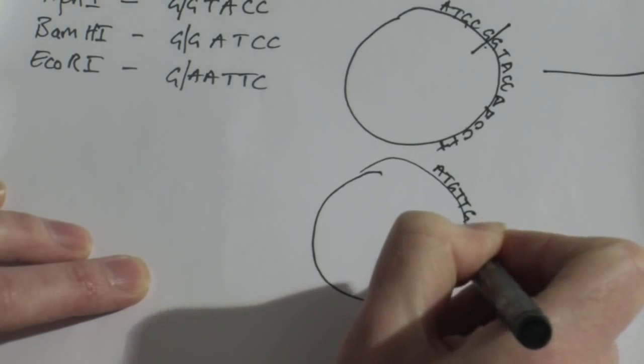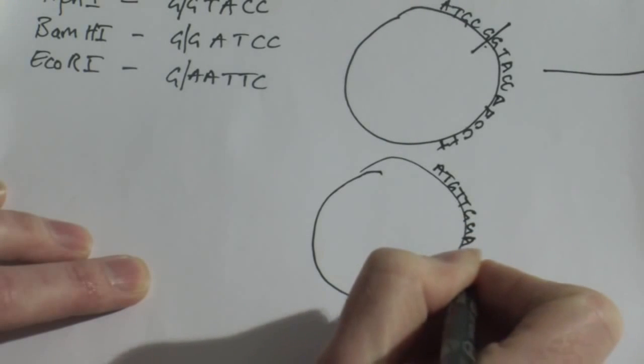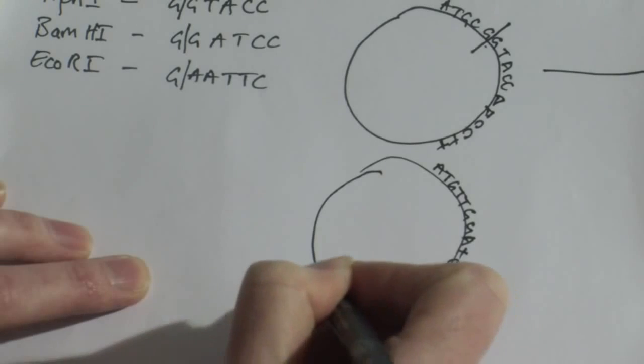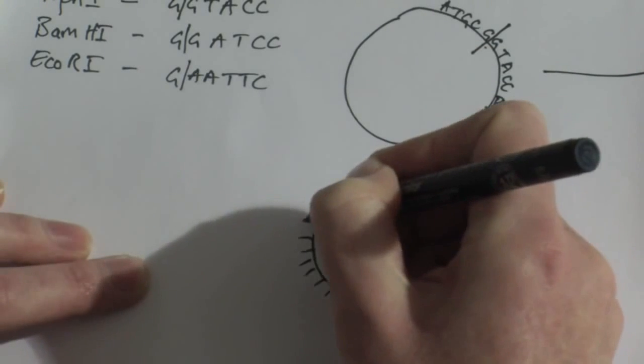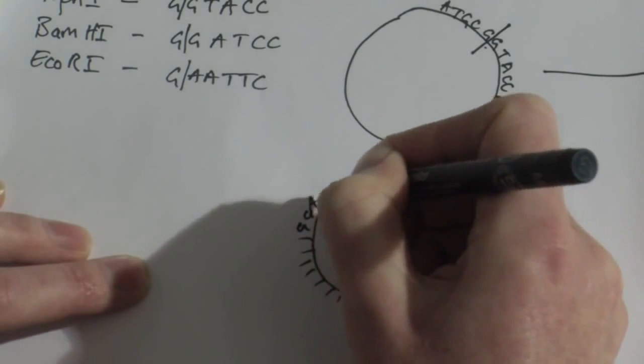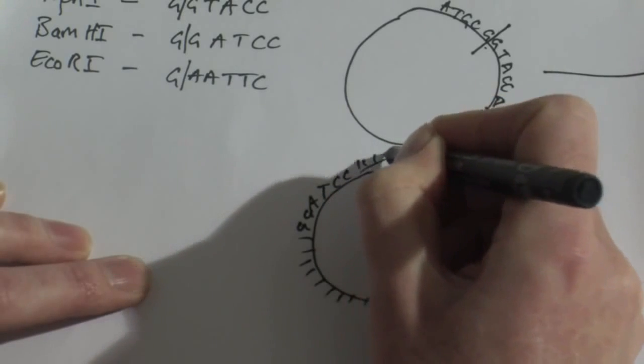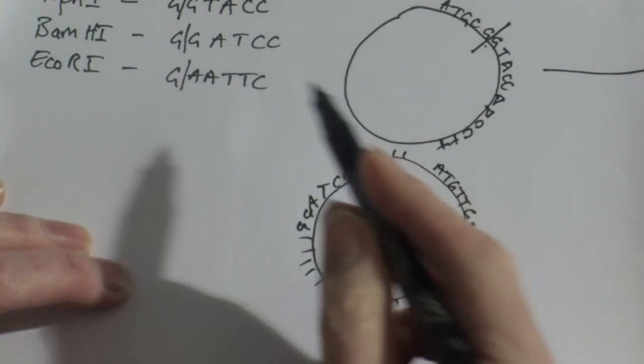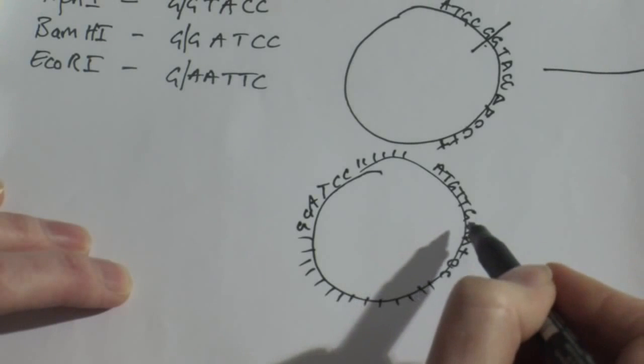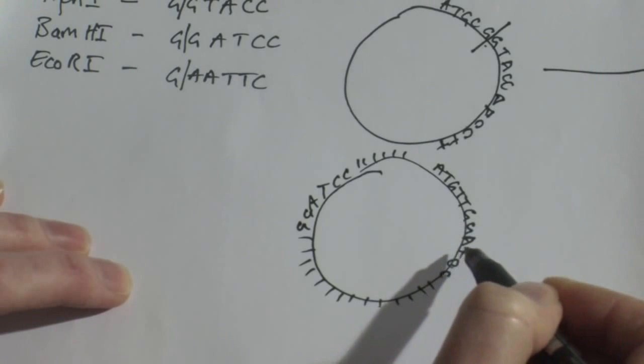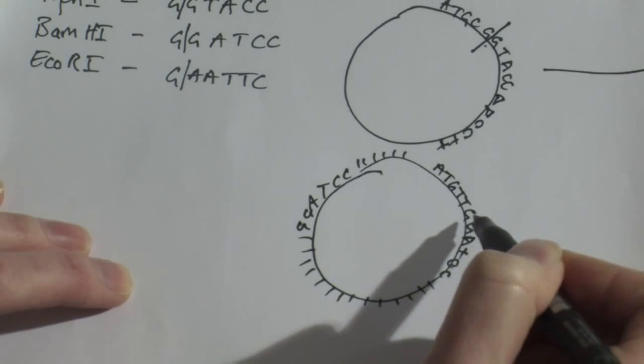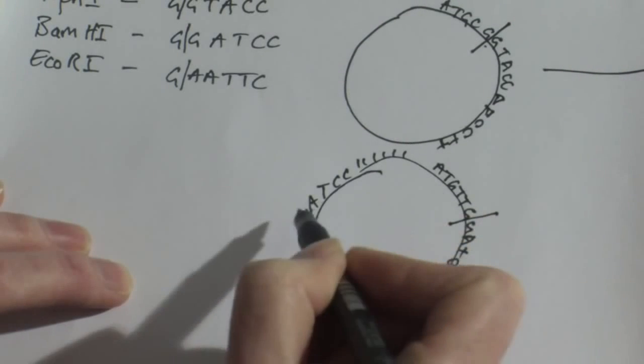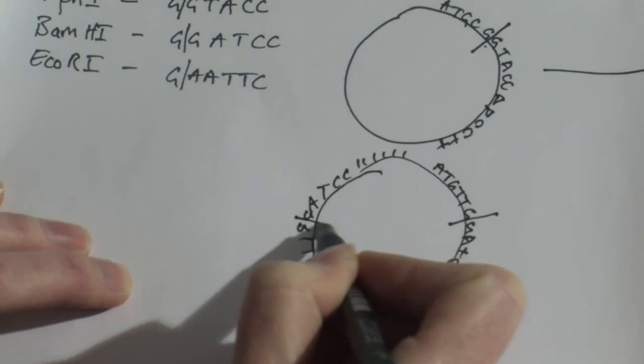In this example, I've got a BAM site, G-G-A-T-C-C, nucleotides running all the way around here. And imagine that there was another BAM site, G-G-A-T-C-C here, nucleotides all the way. If I was to digest this plasmid with BAMH1, BAMH1 has got two restriction sites. There are two sites that the enzyme is able to digest this DNA. So BAM site is going to cut there.